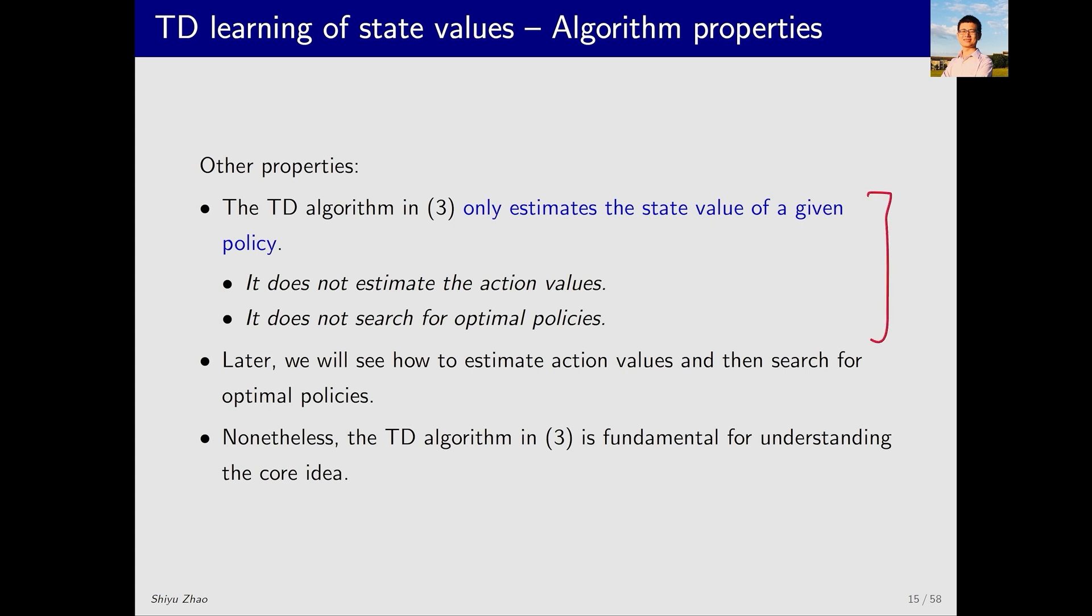First, let's look at what it can and cannot do. What exactly does this TD algorithm do? It estimates the state value for a given policy. So the TD algorithm only estimates the state value and performs policy evaluation. What can't it do? It cannot estimate action values, nor can it directly generate optimal policies. However, based on this algorithm, we will soon extend to obtain a series of TD algorithms that can estimate action values. Combined with the policy improvement step, they can eventually obtain optimal policies.